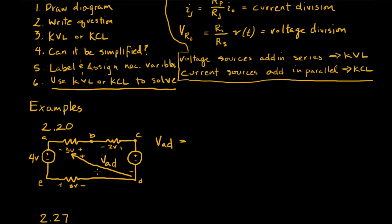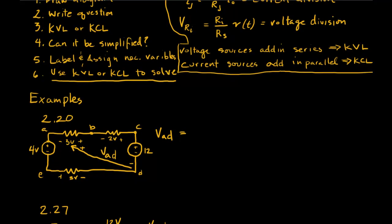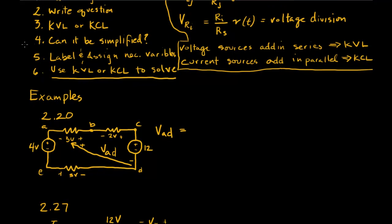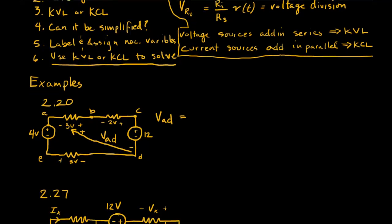So now that you've done this, you can do KVL, and you can choose any loop you want that includes VAD. So you could start here at D, and then go up VAD, and that would be negative VAD. And then negative 3 volts, negative 2 volts, and then positive 12 volts as you come around that loop. Set that equal to zero, and solve it. So we didn't need to simplify there, and then we did our labeling and assigning, and then moved on and solved the problem.